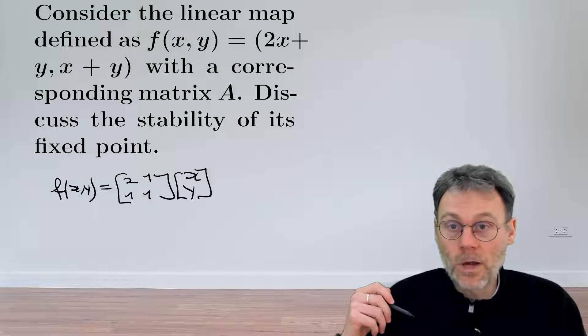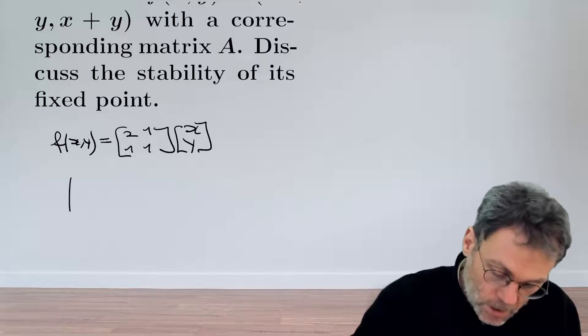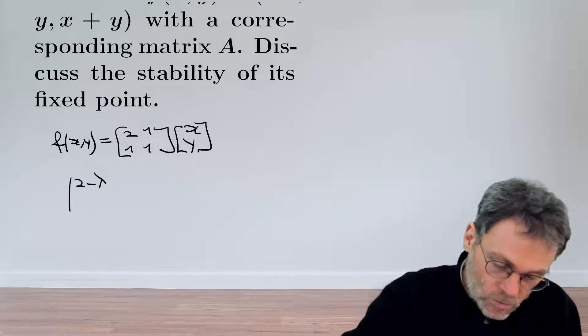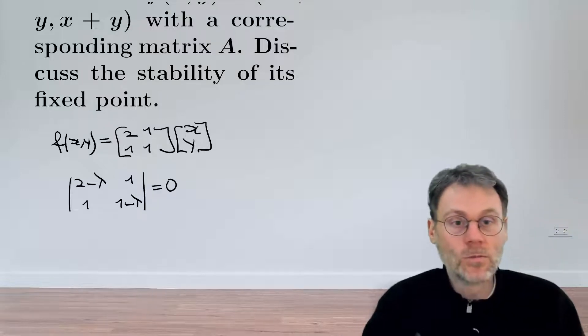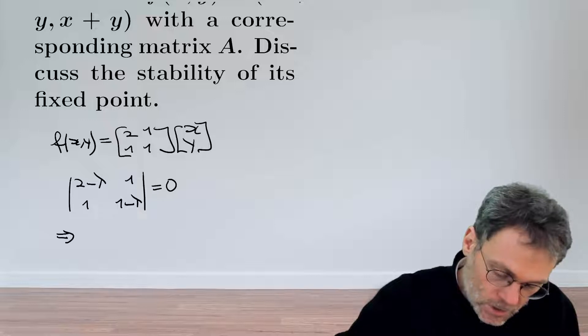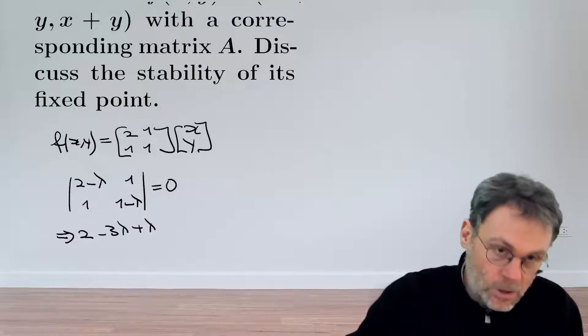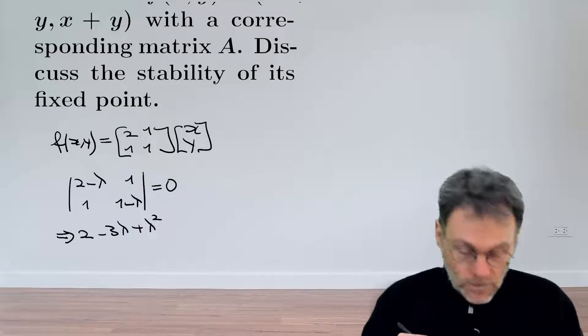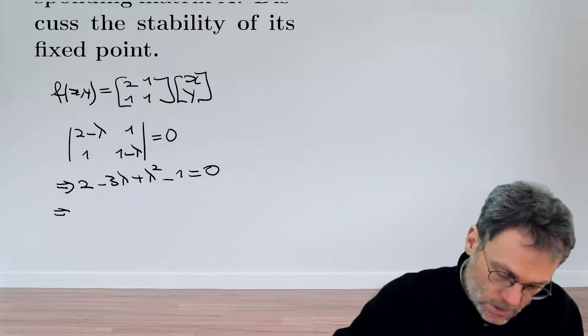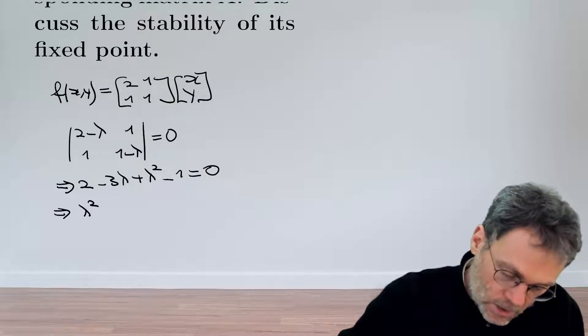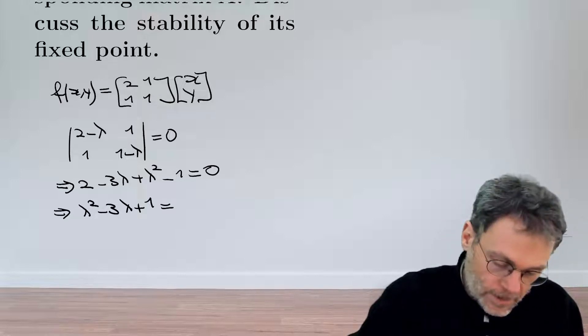What's also not surprising is the next step, which is calculating our friends the eigenvalues of this matrix. So we have the determinant 2 minus lambda, 1, 1, 1 minus lambda, and that should be equal to 0. This gives us 2 minus 3 lambda plus lambda squared, and then finally minus 1 equal to 0.